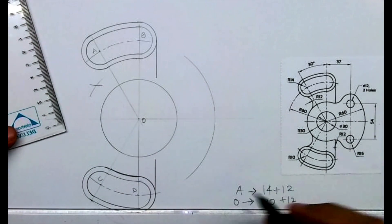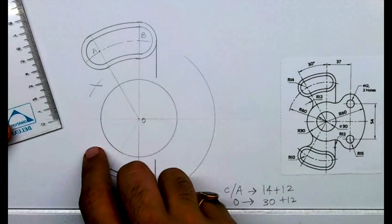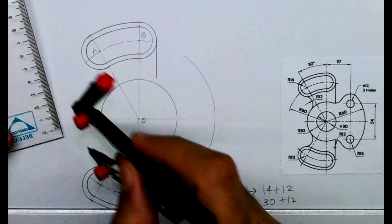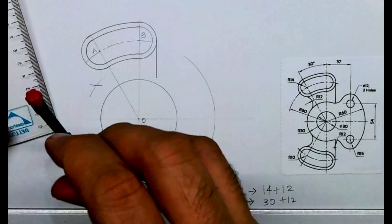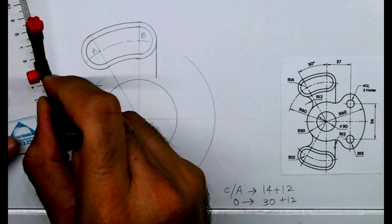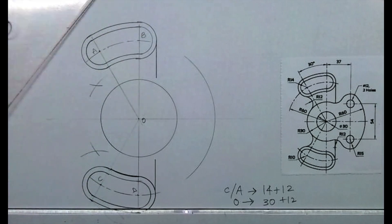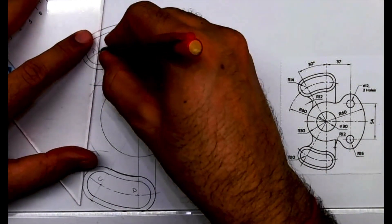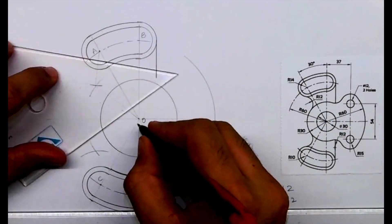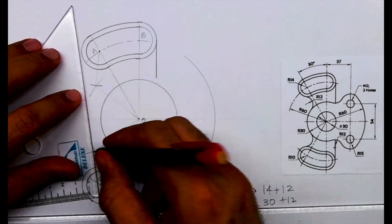Now the same thing I have to do from down also. From C we'll cut 14 plus 12, and from O we'll cut 30 plus 12. Wherever it intersects, from that point we can join A and O, and we'll get the exact point to draw radius 12.